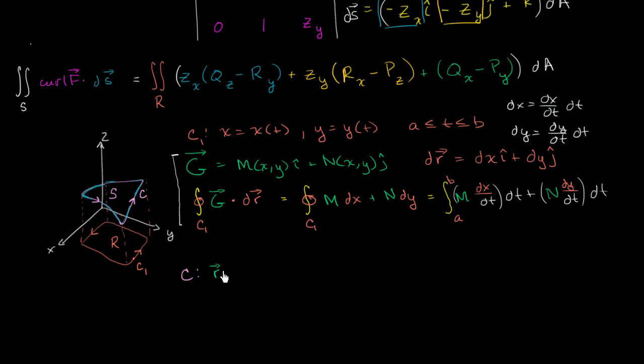And x is still just going to be x of t i, plus y of t j, and now we're going to have a z component. And z is going to be a function of x and y, which are in turn functions of t.